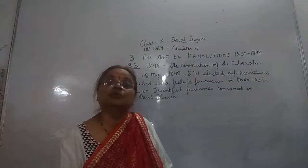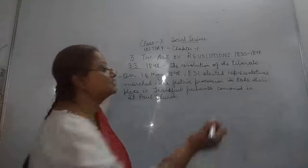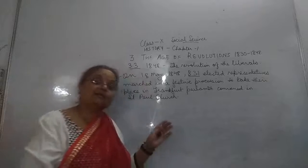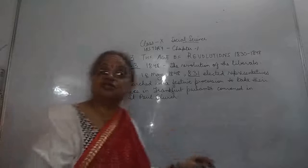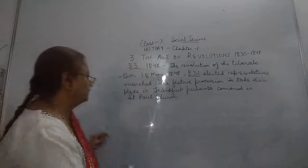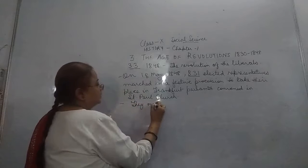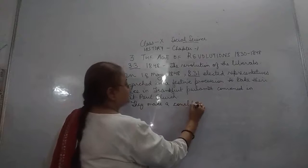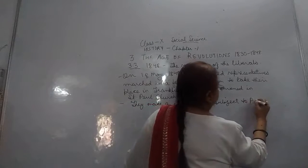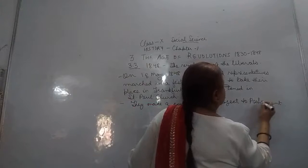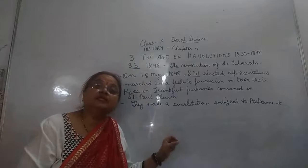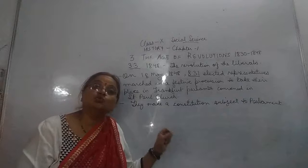The king's name was Frederick Wilhelm IV. These 831 elected representatives were all the educated elite group — capable of making a constitution. So they drafted a constitution and, with the deputies, offered the crown on these terms to Frederick Wilhelm IV.